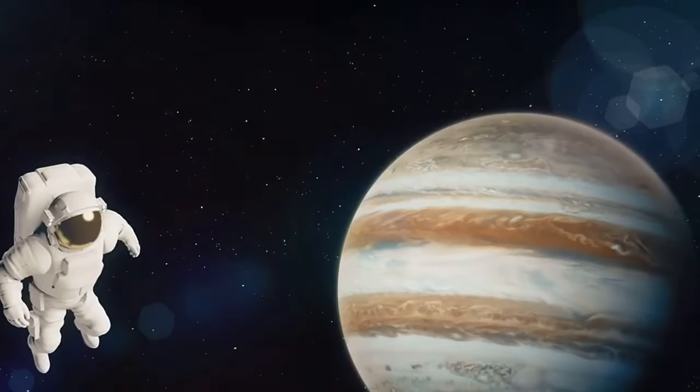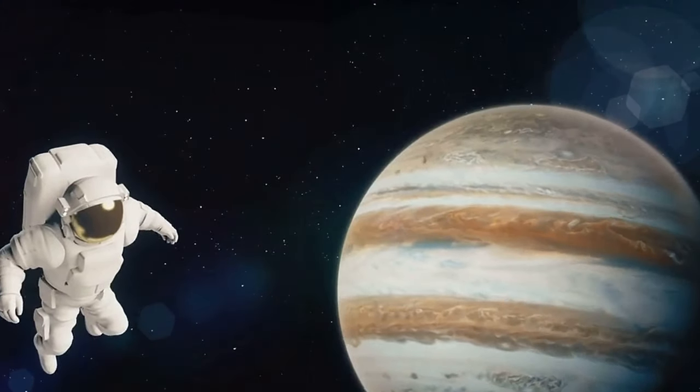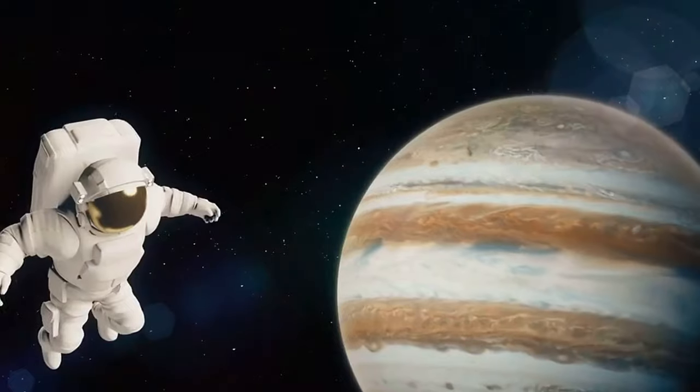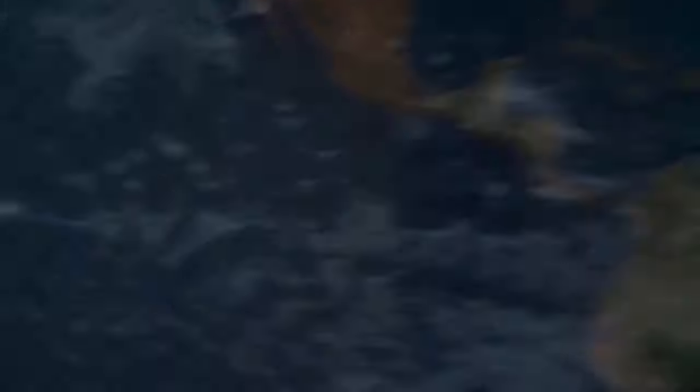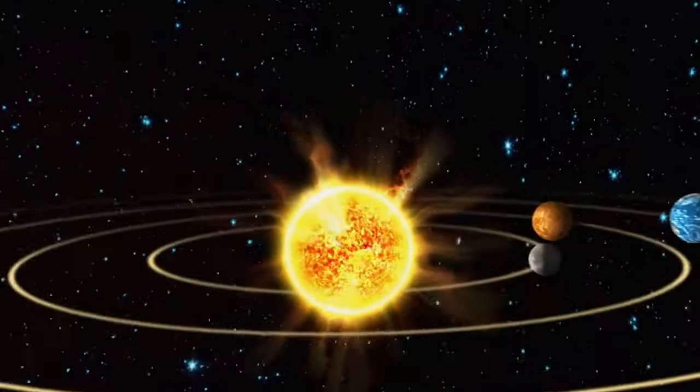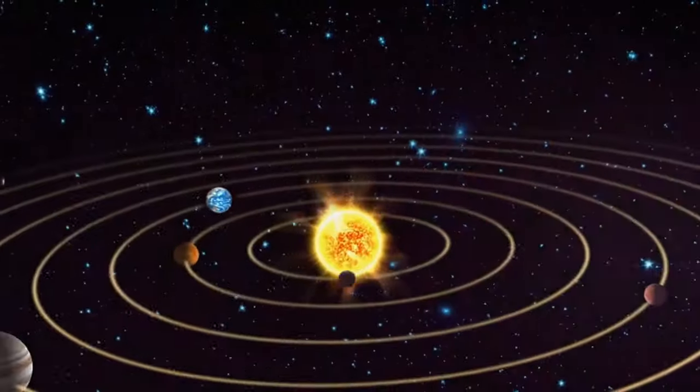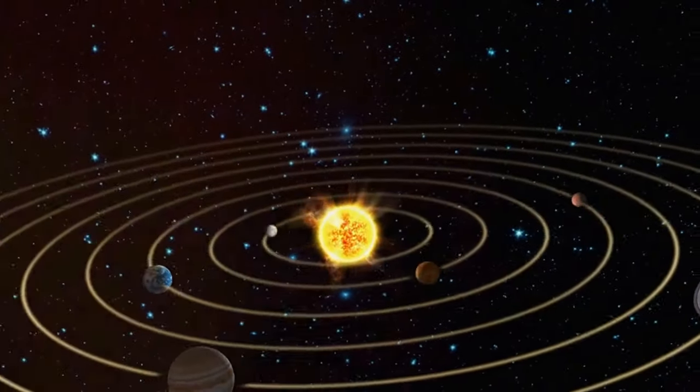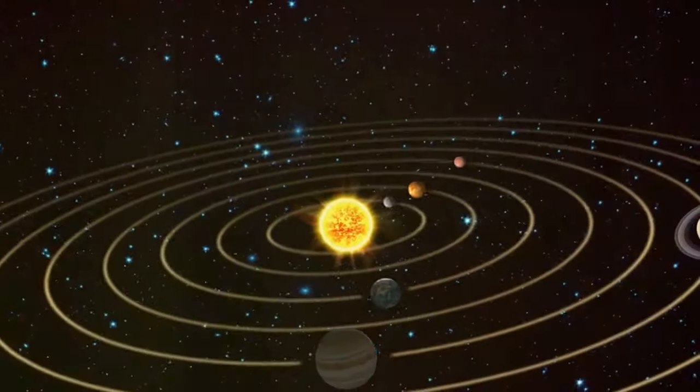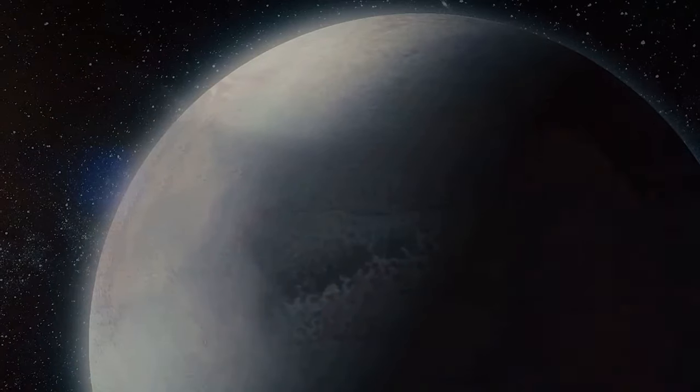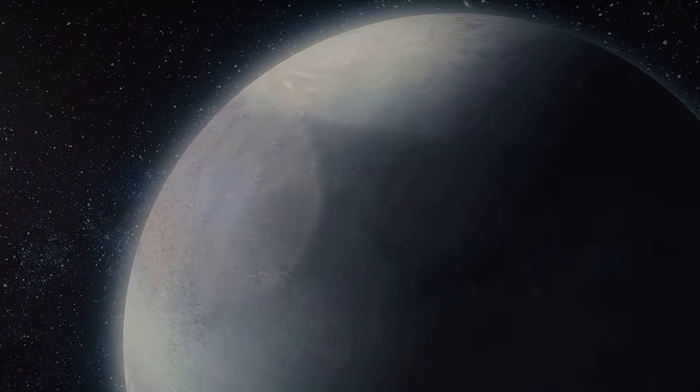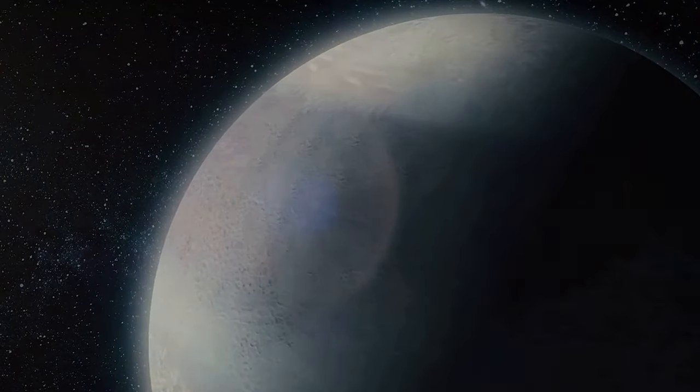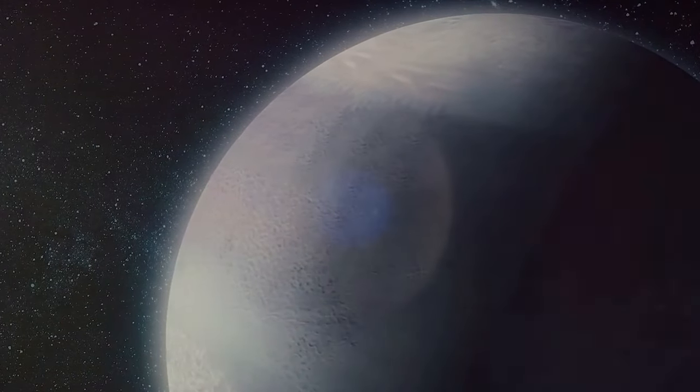He discovered moons orbiting Jupiter, proving not everything revolved around the Earth. This shattered the Earth-centric view of the cosmos, which had held sway for centuries. Then came Johannes Kepler, who took up the mantle and continued to push the boundaries of our celestial understanding. He formulated the laws of planetary motion, showing that planets moved in elliptical orbits around the Sun, not circular as previously believed. This was another nail in the coffin of the Earth-centric universe.